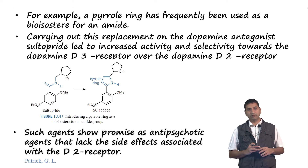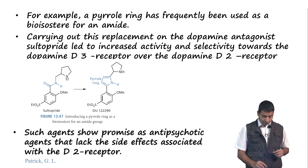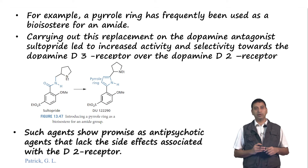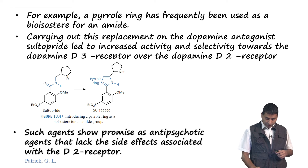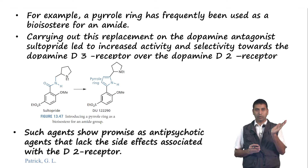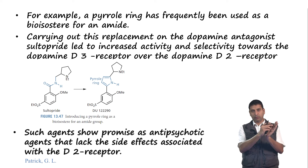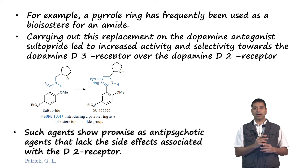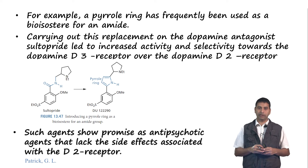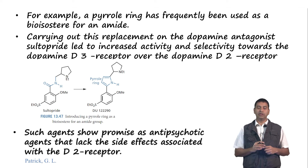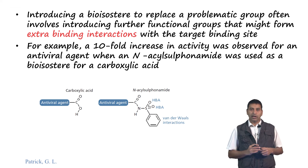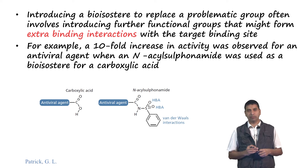For example, the pyrrole ring has frequently been used as a bioisosteer of an amide. In this example of sultopride, which is an antagonist, the amide of interest can be replaced with a pyrrole ring. There are common elements in these two functional groups: the C=O is aligned in one direction and the new C=C in the pyrrole ring is also aligned in the same direction, introducing planarity. These pyrrole-containing agents have shown promise as antipsychotic agents without the side effects associated with the dopamine D2 receptor linked to sultopride. Introducing a bioisosteer can also involve adding further functional groups that form extra binding interactions.